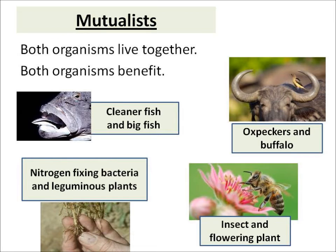With mutualistic relationships, both organisms benefit from the relationship. You need to know about four examples. Cleaner fish are tiny little fish that clean the teeth of big fish — they get some food and the big fish get their teeth cleaned.